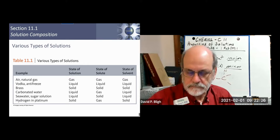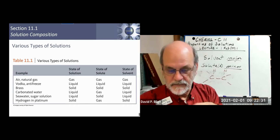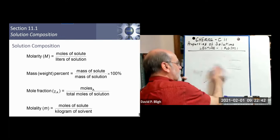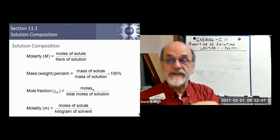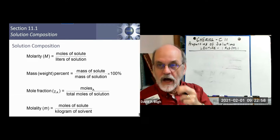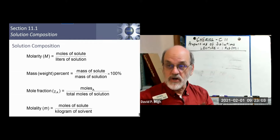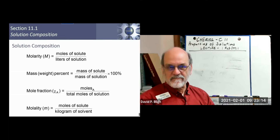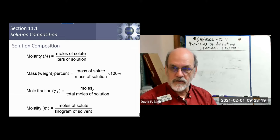So those are the possible homogeneous mixtures with different phases. Now, since we have major and minor components, we want to identify the concentration of those components — because concentration can vary. We want a way to express that, and it depends on what you're going to do with the information as to which expression is best. The most common expression of concentration in chemistry is molarity.